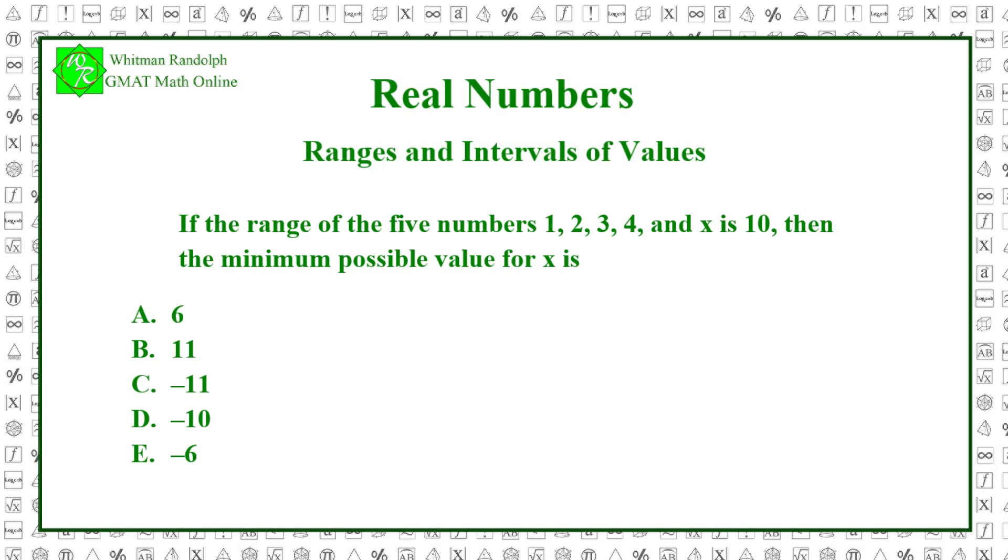But negative numbers are also possible, and in this case, since 4 is the largest number listed, and 4 minus minus 6 equals 4 plus 6, which equals 10, then minus 6, which is less than 11, is the value we want. So the correct answer is E.